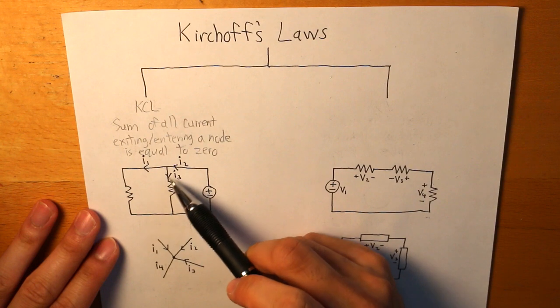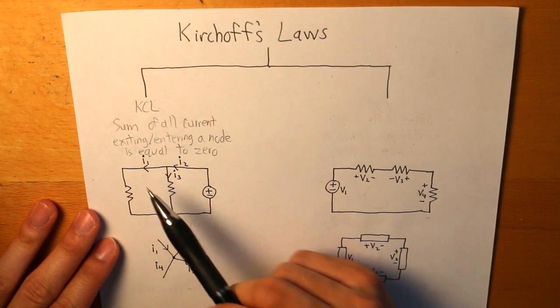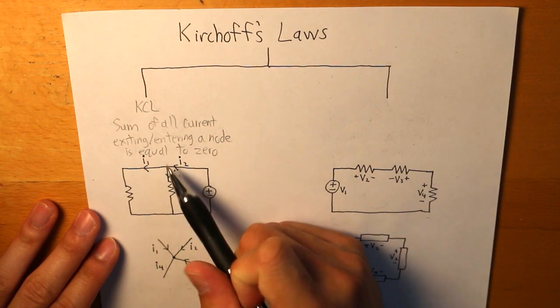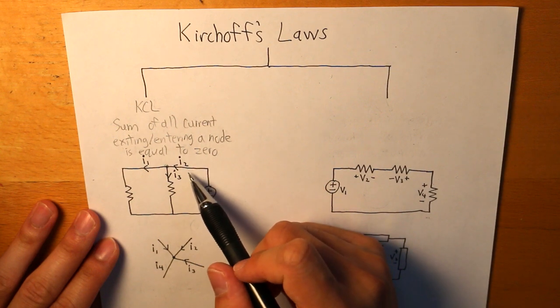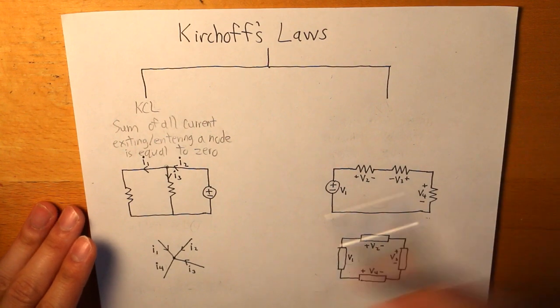And what we have here, a diagram below, is how KCL works. So we have two currents that is exiting the node and we have one current right here that is entering that node, and we could make this into an equation.